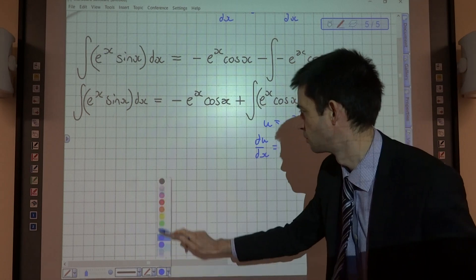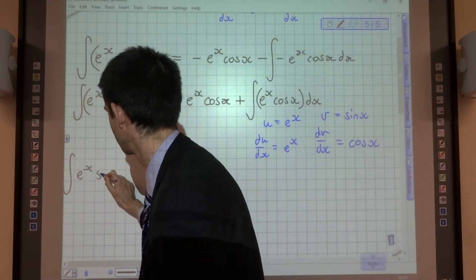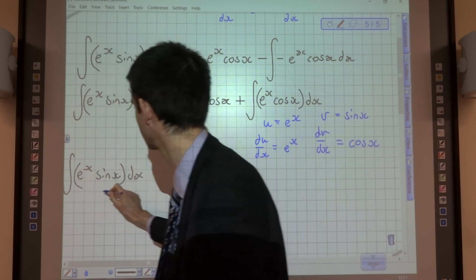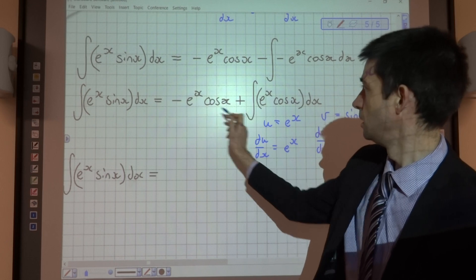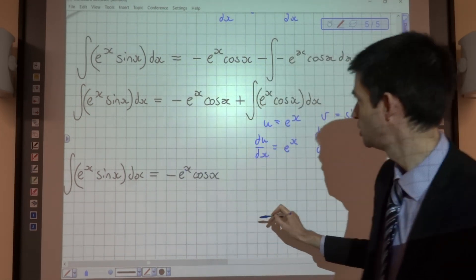OK, now let's write the whole thing. The original integral is e to the x sin x equals negative e to the x cos x. So that bit hasn't changed.